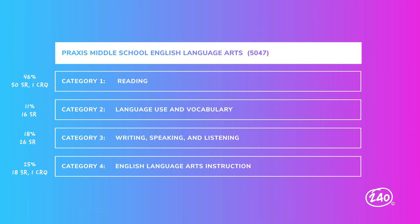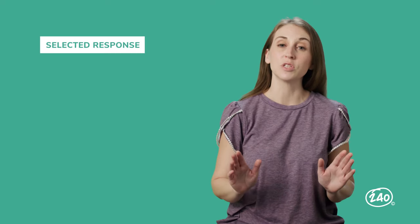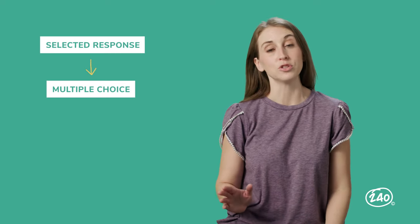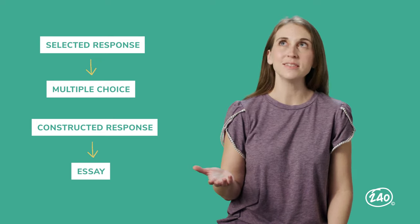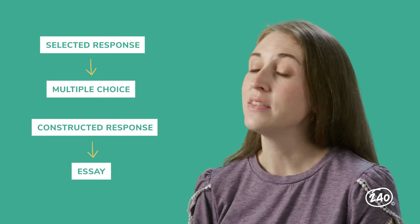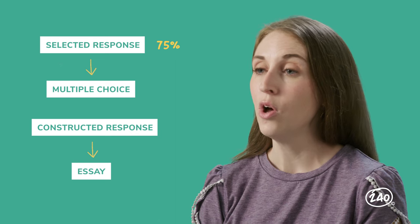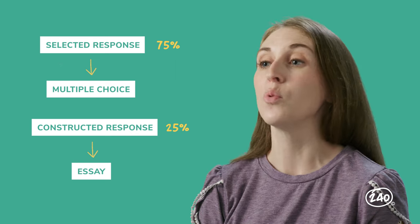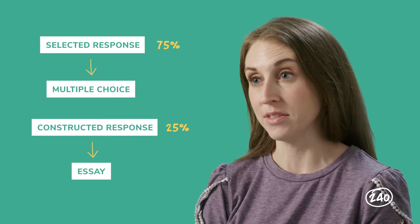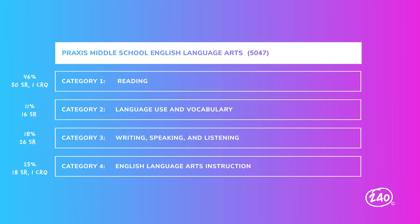There are two styles of questions on this exam: selected response and constructed response. A selected response question is a multiple choice question. A constructed response is like an essay. The selected response portion accounts for 75% of your overall score, while the constructed response makes up 25%. There are two constructed response questions in all — one in the reading category and one in the English Language Arts instruction category.